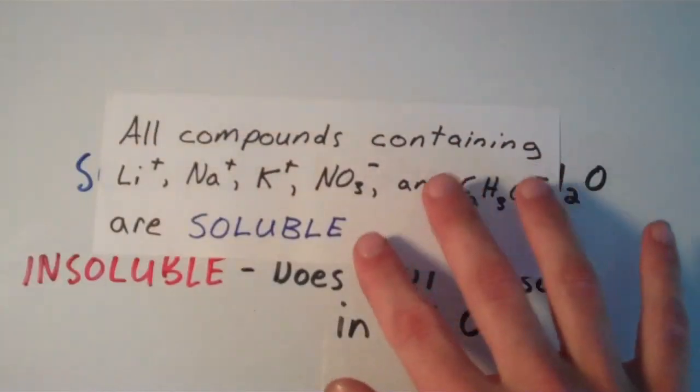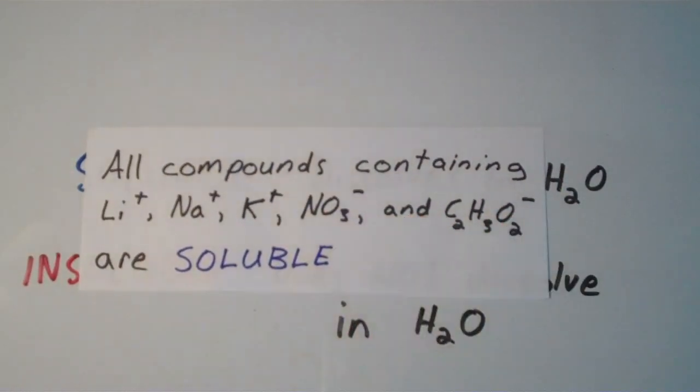First off, all compounds containing lithium ion, sodium ion, potassium ion, nitrate ion, and acetate ion are all soluble. This is the easiest rule because there's no exceptions to this rule.